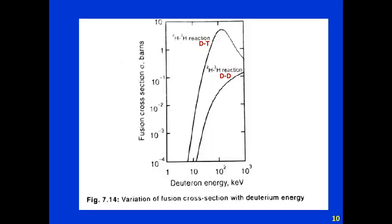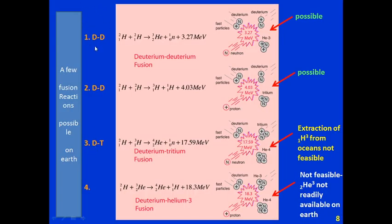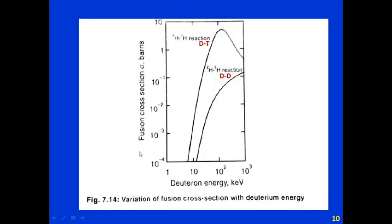Looking at the fusion cross section curve — reaction probability versus deuteron energy — for both DT (deuterium-tritium) and DD (deuterium-deuterium) reactions, both use deuterium. The DT reaction has higher probability. At a particular deuteron energy of say 100 keV, the DD reaction has less probability than the DT reaction. So for a particular energy of deuteron, the DT reaction is more probable than the DD reaction.